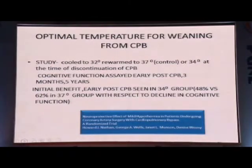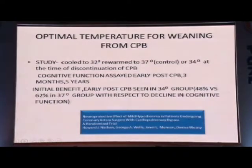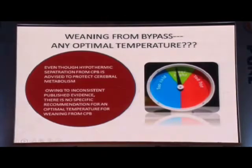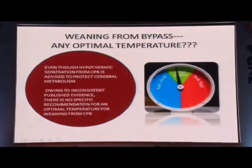Optimal temperature for weaning from CPB: anything between 32 to 37 degrees. A study comparing 34 degrees with 36 degrees found no significant difference — in fact, neurocognitive dysfunction was better preserved at 34 degrees. So nowadays, you do not warm the patient to 37 degrees. Hypothermic separation from CPB is advised to reduce cerebral metabolism, but owing to inconsistent published evidence, there is no specific recommendation for an optimal weaning temperature. Anything over 34 degrees is fine — do not warm the patient too much.